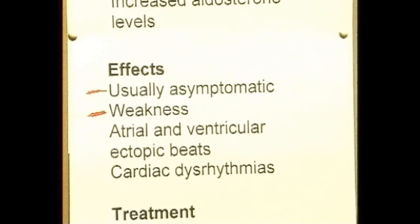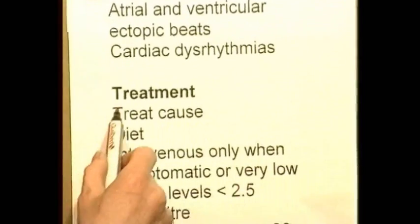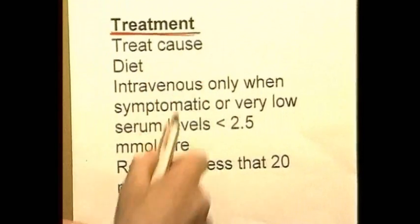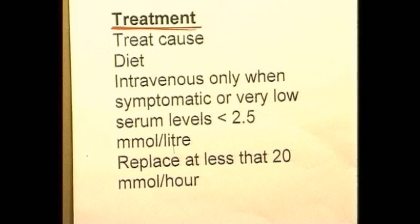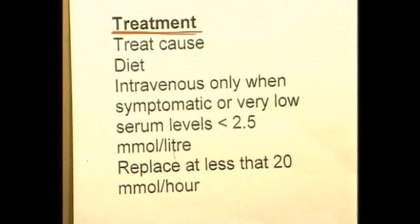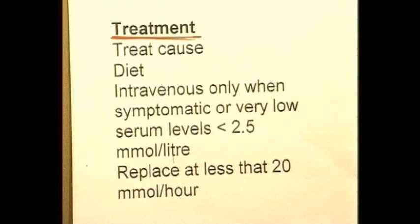For treatment of hypokalemia, we need to treat the underlying cause and restore a normal diet. A normal diet contains plenty of potassium, particularly in fruit — bananas have lots of potassium. Fruit juices, tea, and in England chips made from potatoes also contain quite a lot of potassium.